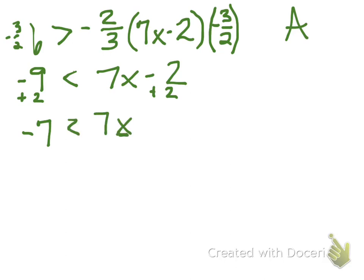And my goal is to get X by itself. So I've got to get rid of that seven. I divide both sides by seven. I get negative one is less than X.